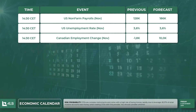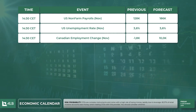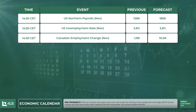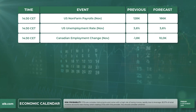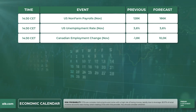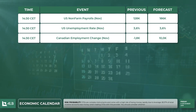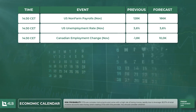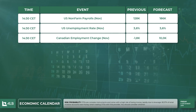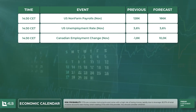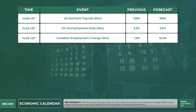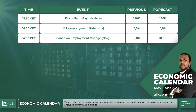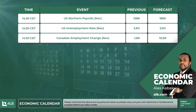Lastly, we look at the Canadian employment change for the period of November. The Canadian economy shed 1,800 jobs in October 2019 after creating 53,700 in the previous month; markets expected the economy to have created 15,900 jobs. Full-time work declined by 16,100 while part-time increased by 14,300. The previous figure is minus 1,800 and the forecast is at 10,000.